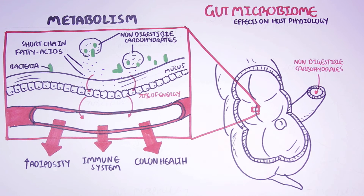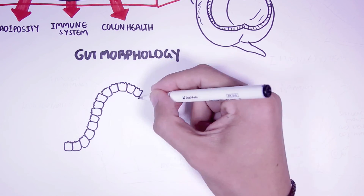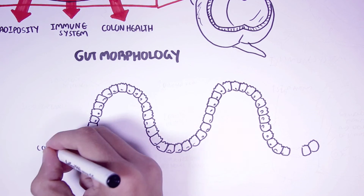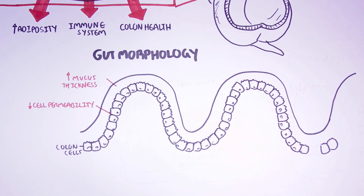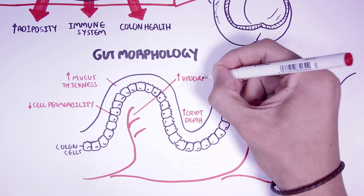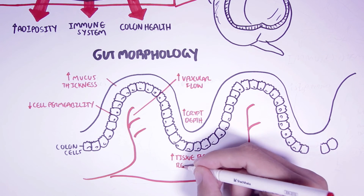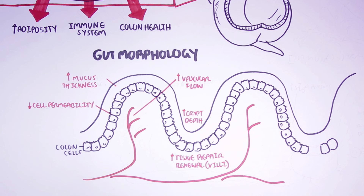Another fundamental effect the gut microbiota has on our body is its effect on gut morphology — gut structure. These effects include increasing the amount of mucus in the intestinal tract, decreasing intestinal cell permeability, deepening the crypts of the intestine, increasing vascular flow, and stimulating tissue repair and renewal, particularly the villi. All of these effects promote barrier integrity as well as the function of the digestive system. The mechanism remains elusive, but most research suggests it is attributed to the production of short-chain fatty acids following fermentation of non-digestible foods.